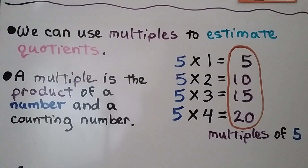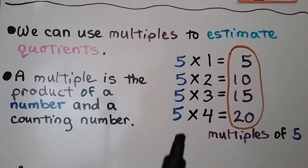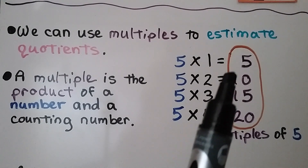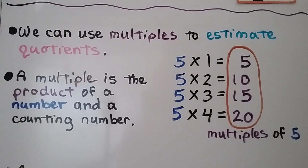We can use multiples to estimate quotients. A multiple is the product of a number and a counting number. So the multiples of 5 would be 5, 10, 15, 20, and we could keep going.